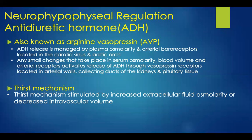We'll now begin our discussion on the neurohypophysial regulation of antidiuretic hormone. Antidiuretic hormone is also known as arginine vasopressin. ADH release is managed by plasma osmolarity and arterial baroreceptors located both in the carotid sinus and in the aortic arch. Small changes in serum osmolarity, blood volume, and arterial receptors trigger the release of ADH through vasopressin receptors, which are located in the arterial walls, collecting ducts of the kidneys, and in pituitary tissue.